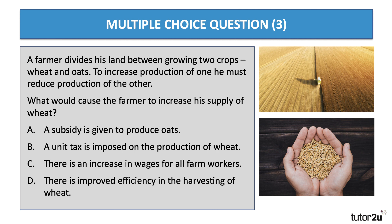Many farmers have a choice of which crops to grow. In this situation they can grow two crops, wheat and oats. The answer is D — increased efficiency in the harvesting of wheat would reduce costs and therefore potentially increase profits at each price level, so that's the obvious factor. Subsidies that favour oats would shift production the other way. A unit tax would increase costs and lower the supply of wheat. An increase in wages for all farm workers would have no difference in the relative return from supplying wheat and oats.